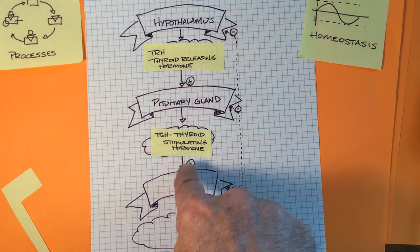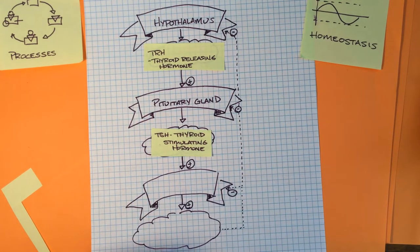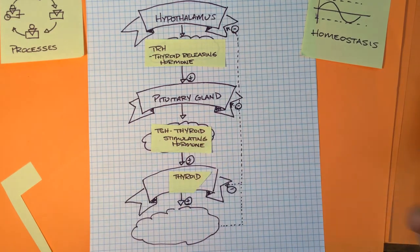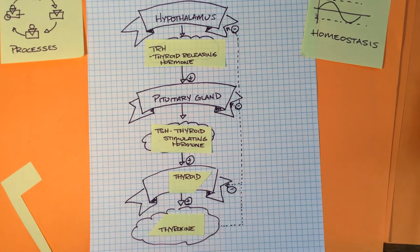That stimulates the thyroid gland to release thyroxin, which is instrumental in keeping your metabolism going fast. So when you're cold, you release a little bit more thyroxin and it actually speeds up your body and warms you up. Super cool. Now here's the thing where negative feedback comes into play.